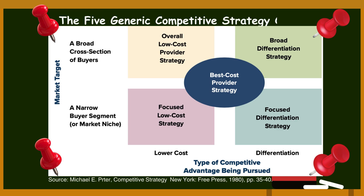Each of the five strategy options represents a distinctly different approach to competing in the marketplace. Which of the five options to employ is a company's first and foremost choice in crafting an overall strategy and beginning the quest for competitive advantage?